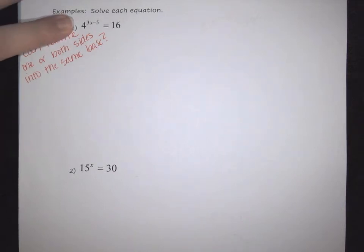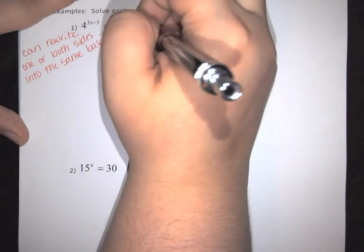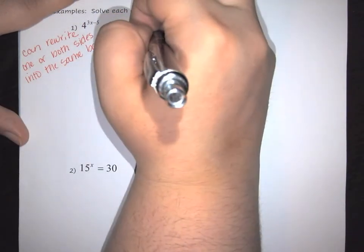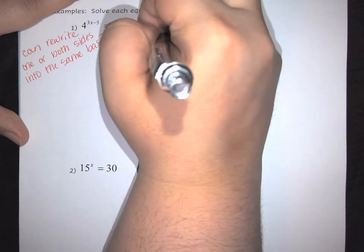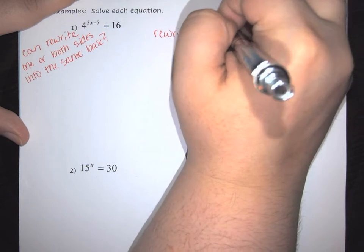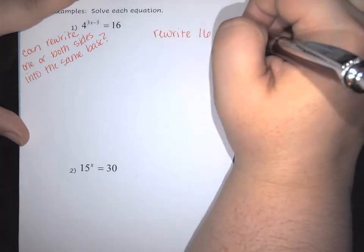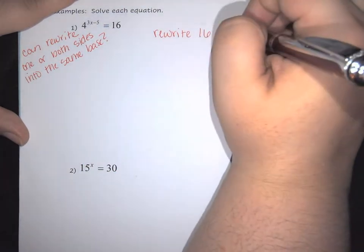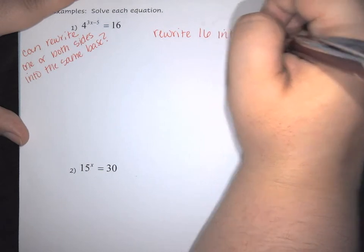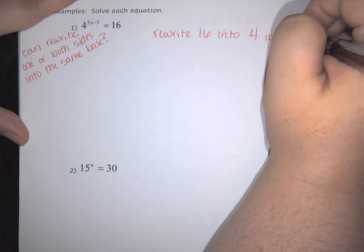Specifically in this equation, I have a 4 and a 16. What I want to do is rewrite 16 as a 4 with a power.